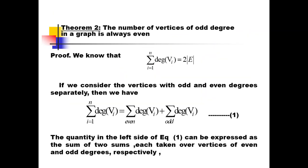Now let's discuss the second theorem. The statement is: the number of vertices of odd degree in a graph is always even. This means in any graph, if you identify the odd-degree vertices and the even-degree vertices, the count of odd-degree vertices is always an even number. We know that for any graph the sum from i equals 1 to n of degree of vi equals two times the number of edges.